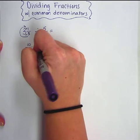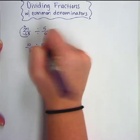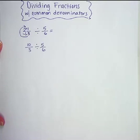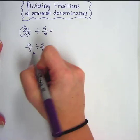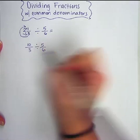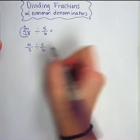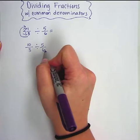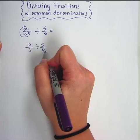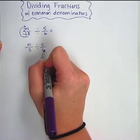10 over 3 divided by 5/6. Now I need to look and see how I can make these have common denominators. Well I could multiply them, 3 times 6 gives me 18. But I think it might be easier just to use 6 as our common denominator and change 3 into 6.